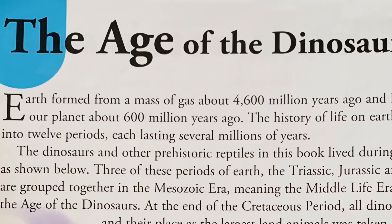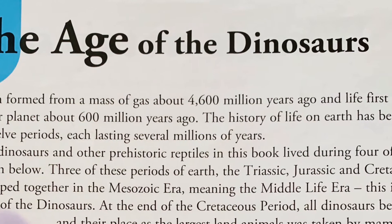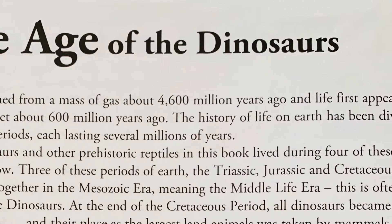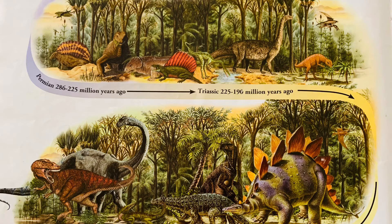The Age of the Dinosaurs: Earth formed from a mass of gas about 4,600 million years ago, and life first appeared on our planet about 600 million years ago. The history of life on Earth has been divided into 12 periods, each lasting several millions of years. The dinosaurs and other prehistoric reptiles in this book lived during four of these periods, as shown below. Three of these periods — the Triassic, Jurassic, and Cretaceous — are grouped together in the Mesozoic era, meaning the Middle Life Era.